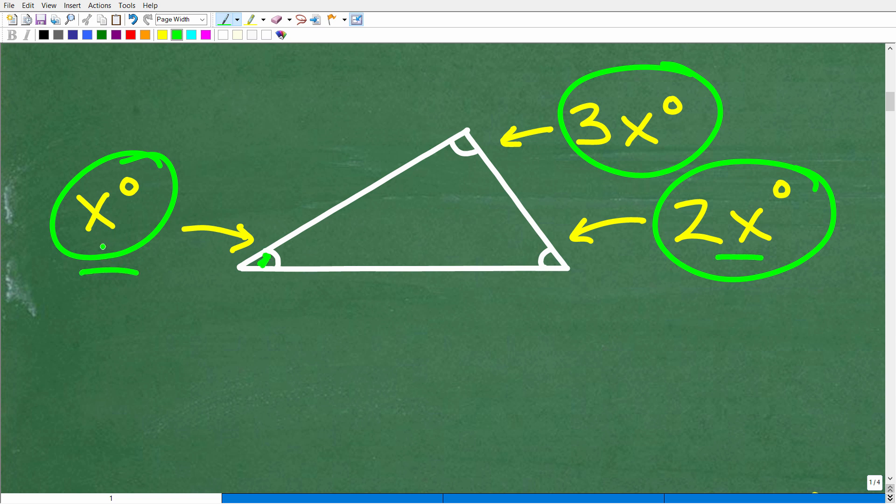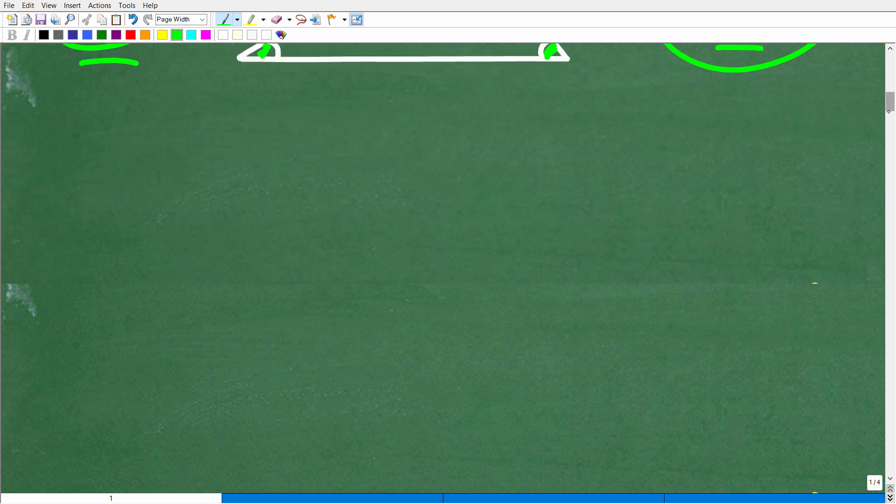This one is twice the smallest, so this is 2x degrees. And then this angle here is 3 times the smallest, or 3x degrees. So how can we approach the solution to this problem? Well, the only way we can solve this problem is we need to know about angles in a triangle. And this is what we need to know.